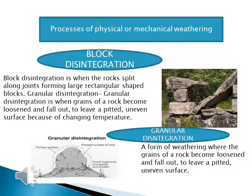Now we have to take the idea about the different processes of physical or mechanical weathering. First is block disintegration. Block disintegration is when rocks split along joints forming large rectangular-shaped blocks. Here we can see in the picture that some blocks of rocks are separated from each other by the process of block disintegration.